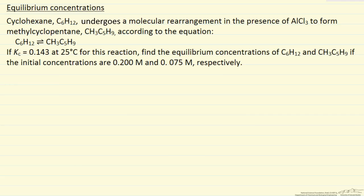I'm going to do an equilibrium calculation here for an isomerization reaction. Aluminum chloride is the catalyst that makes this reaction take place faster, and we're given Kc, the equilibrium constant in concentration units, and we're given the starting concentrations of the reactant and product, cyclohexane and methyl cyclopentane, and then we're asked to determine what are the concentrations at equilibrium.